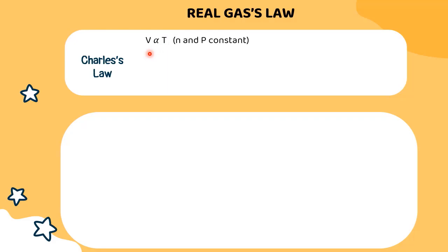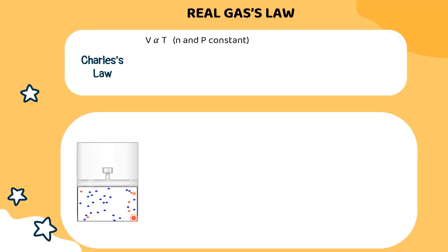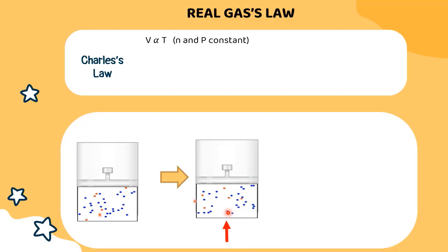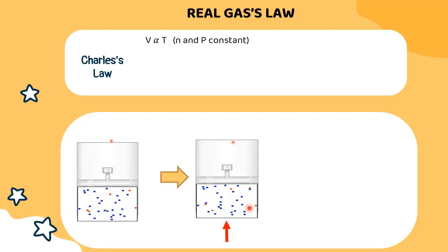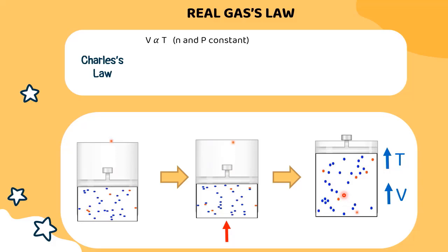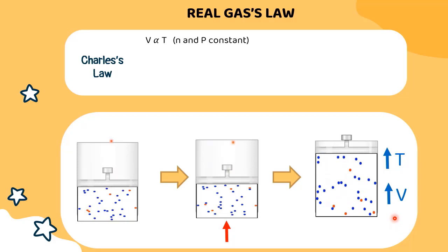The second gas law is called Charles's law, which describes the expansion — referring to the volume of a fixed amount of gas when heated at constant pressure. In other words, there is a directly proportional relationship between volume and temperature. Consider a container with a fixed amount of gas particles that is heated. The molecules exhibit increased movement and begin to hit the walls more frequently, increasing the force. If the wall of the container is flexible, like a balloon, the pressure will remain constant, allowing the volume to increase.